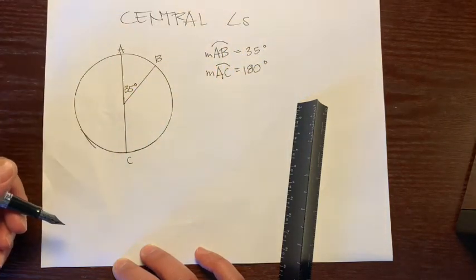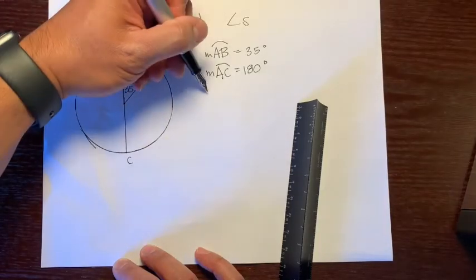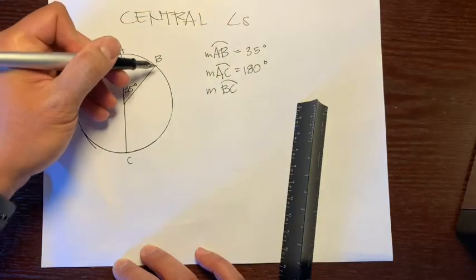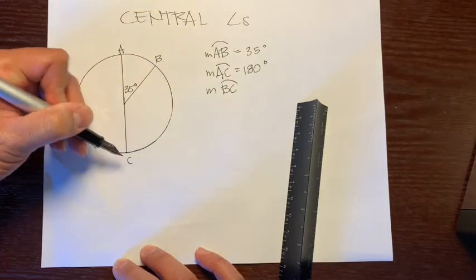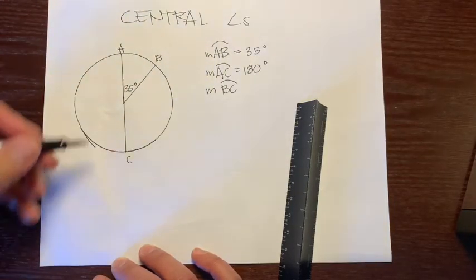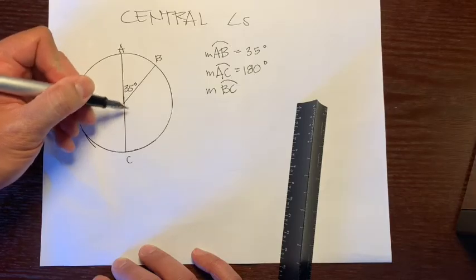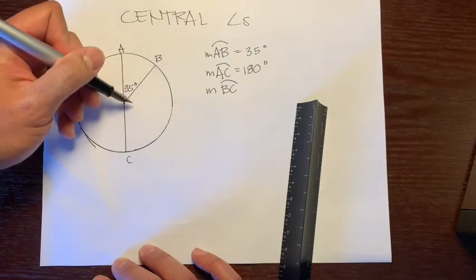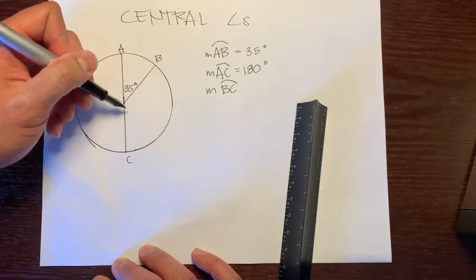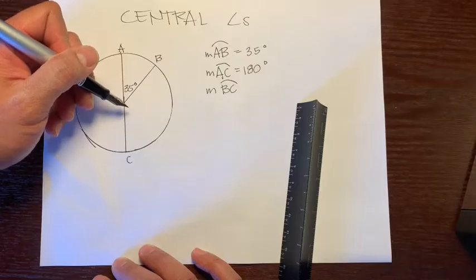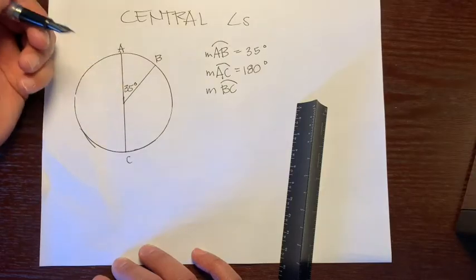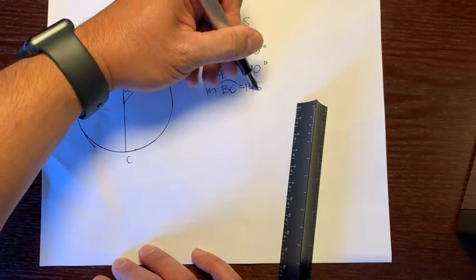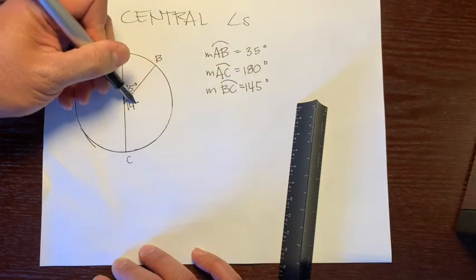Now, let's say another question asked, what is the measure of arc BC, or this arc from here to here? Well, we know that these two central angles are supplementary to each other, because this is a straight line right here. So all we have to do is subtract 35 from 180 degrees. So 180 minus 35 would be 145 degrees.